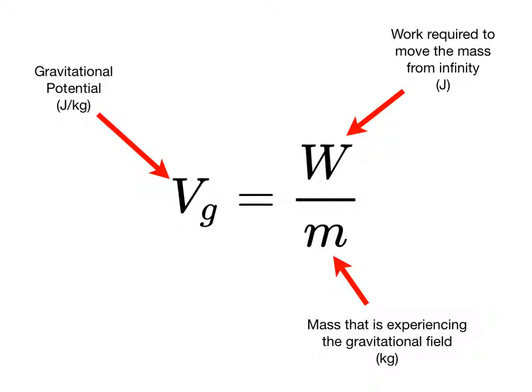So since the force we have to apply is always going to be backwards to the direction that our mass wants to move, the gravitational potential is always going to be a negative number because the work is going to be negative.